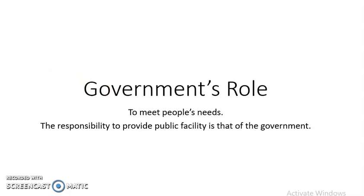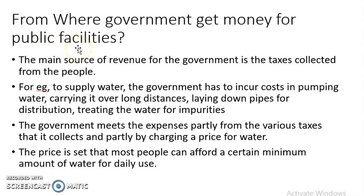Now let us see from where the government gets money for these public facilities. Public facilities are provided by the government — that is its very important role. The main source of revenue for the government is the taxes collected from the people.